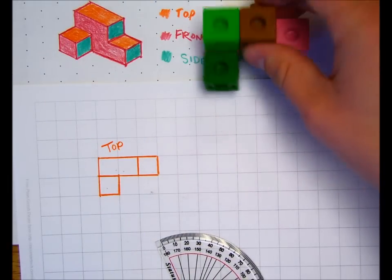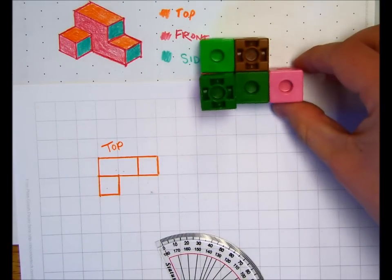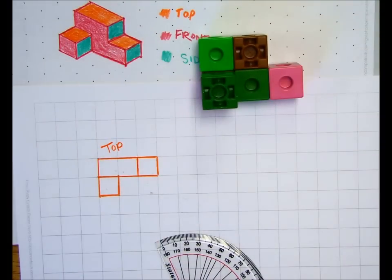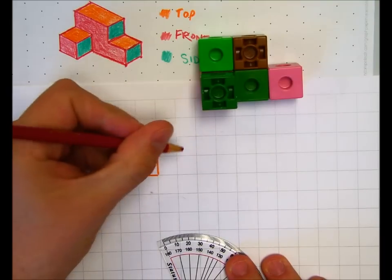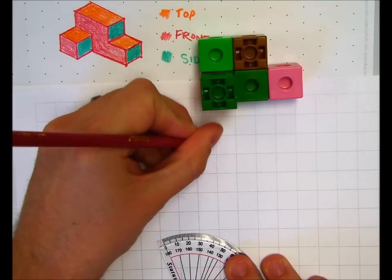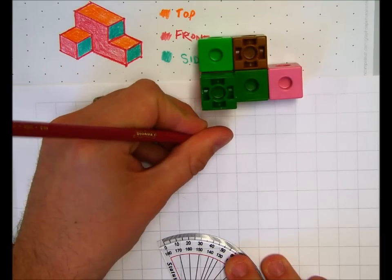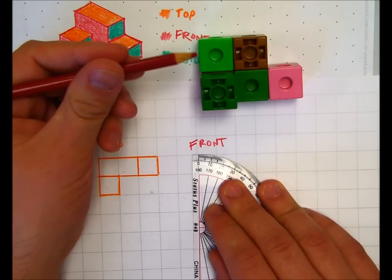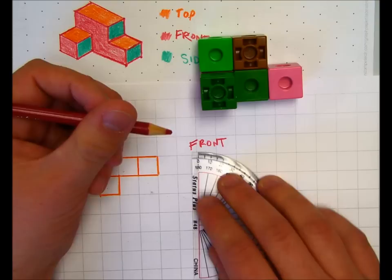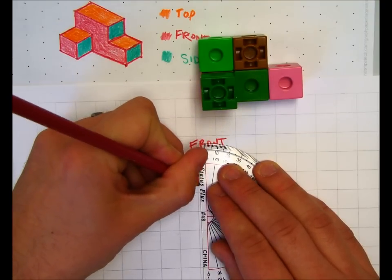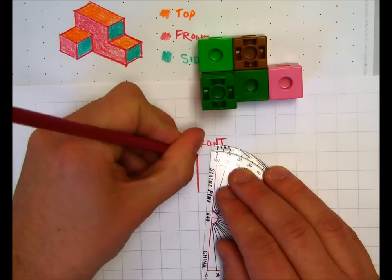Next I'm going to flip it on its side. And so now we see the front of the object. And I'm going to draw that right now. So I'm going to keep the color consistent again.